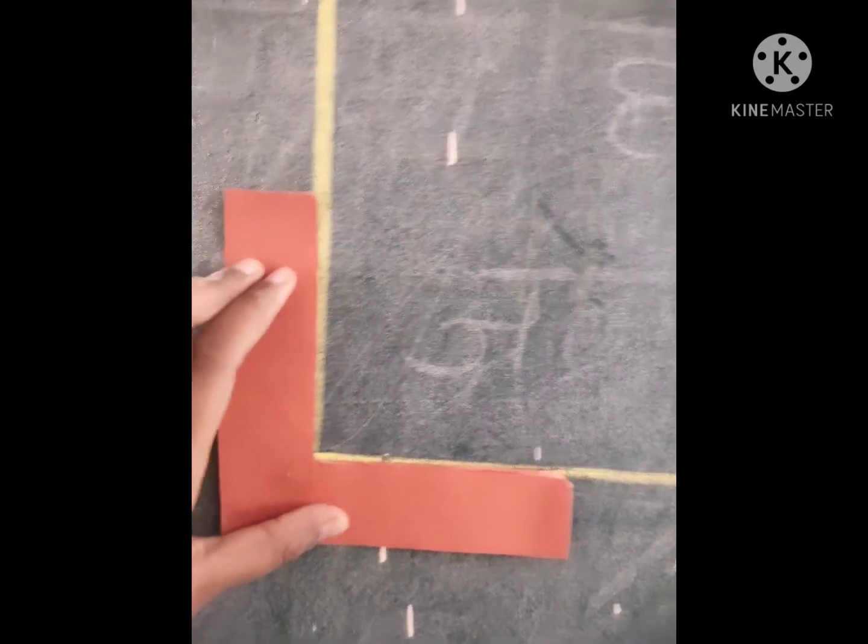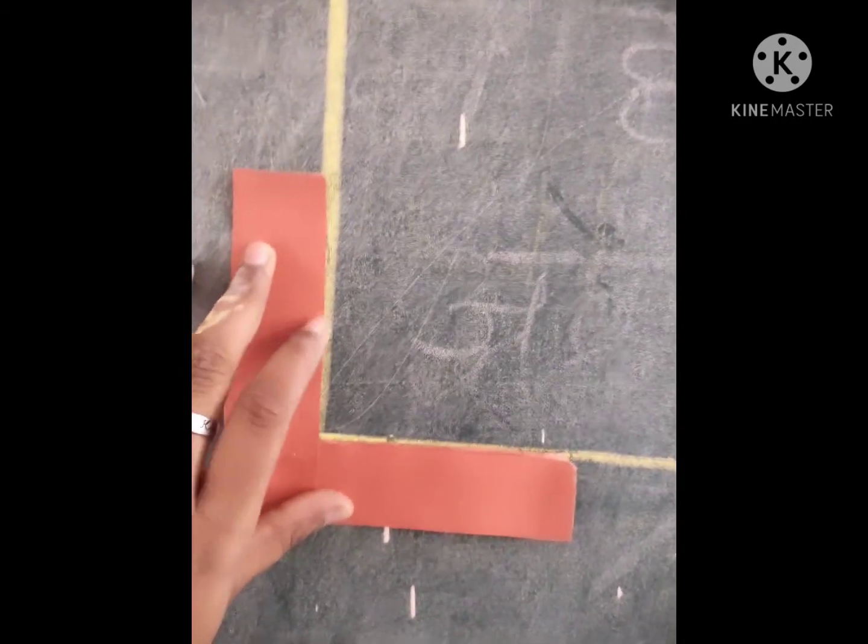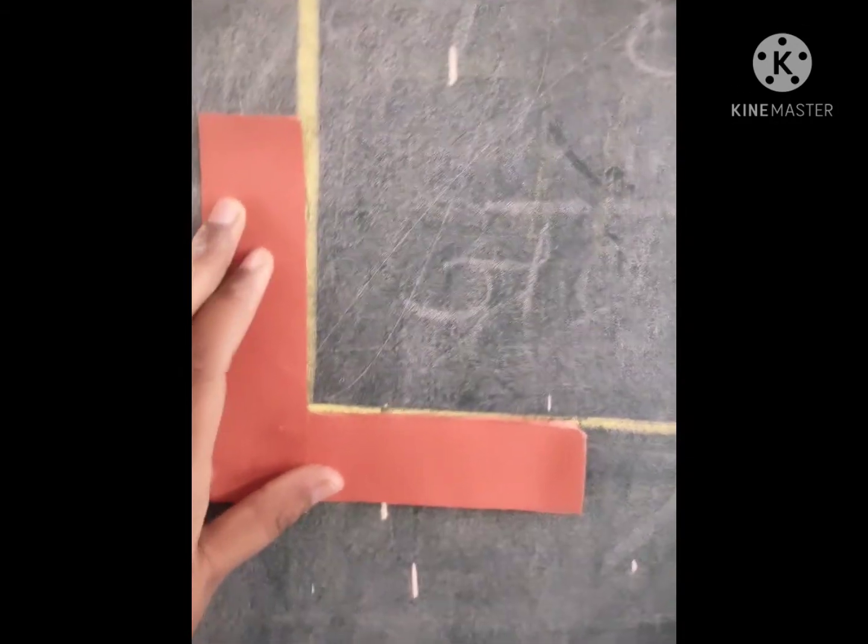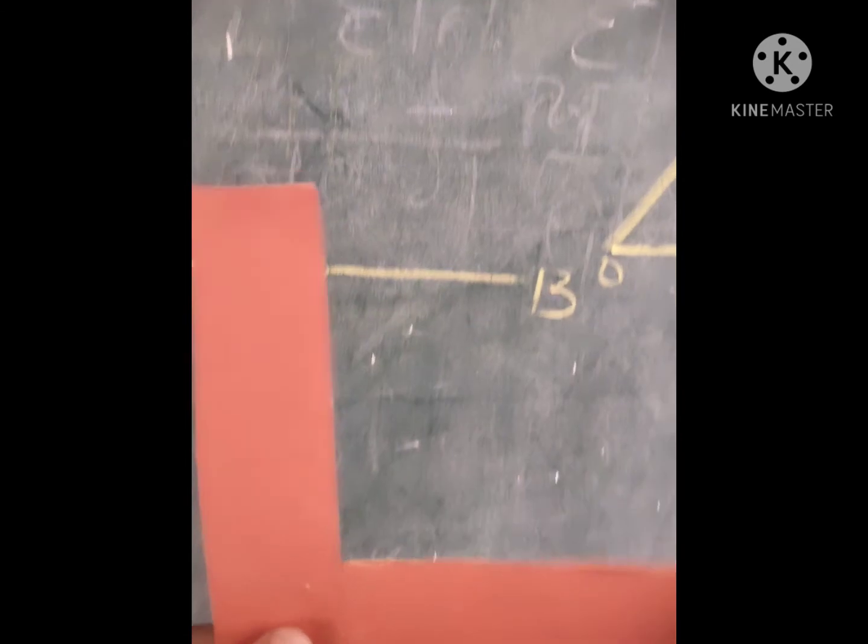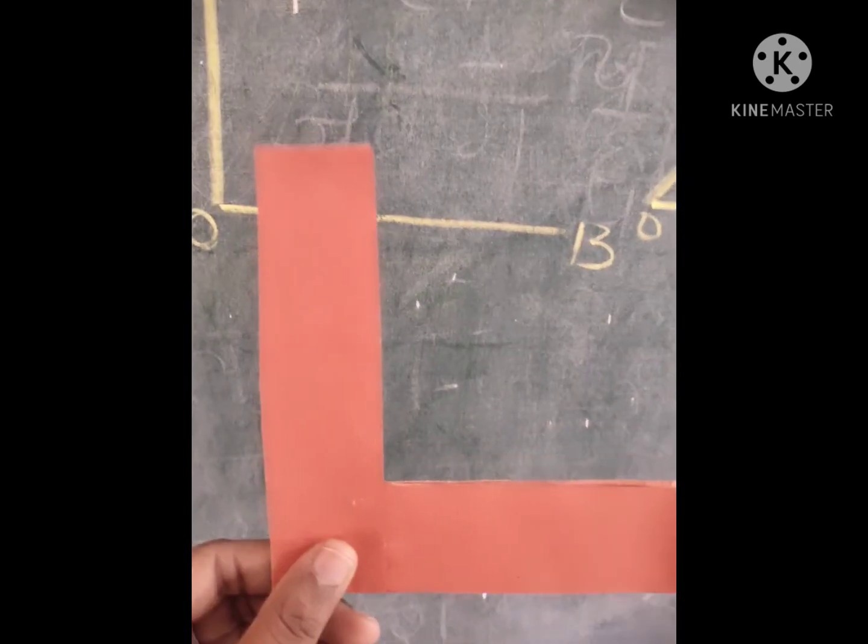So we can safely say that these lines are making a 90 degree angle. This can be a very useful tool to measure 90 degree angles. Thank you, have a nice day.